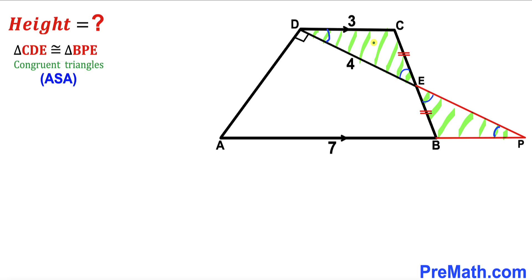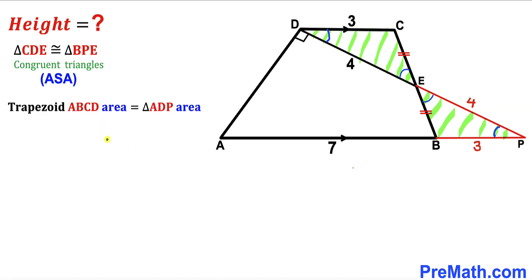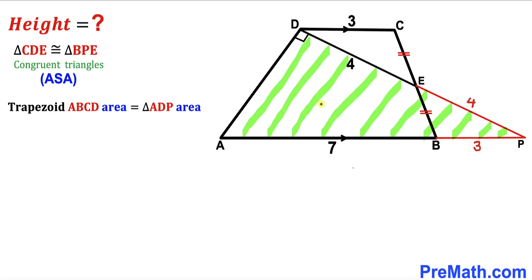Since the two triangles are congruent, segment BP equals segment CD, which is 3 units. Likewise, segment DE equals segment EP, so EP is 4 units as well. We can now observe that the area of trapezoid ABCD equals the area of right triangle ADP, since triangle CDE is congruent to triangle BPE.